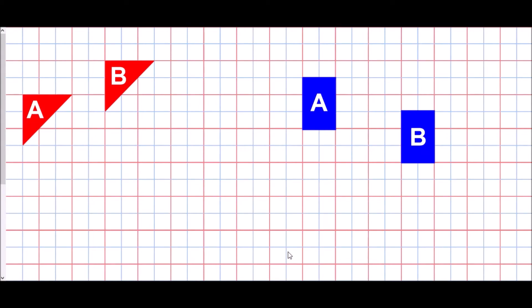The very first thing we need to understand about translation is that it just means to move — it's like a slide. The shapes have moved around the grid in order to go from shape A to shape B. In order to decide how they have moved, we need to think about how far they have moved left and right, and how far they have moved up and down.